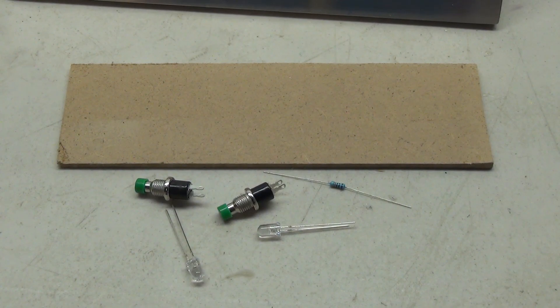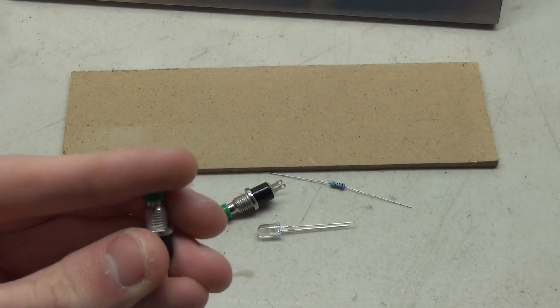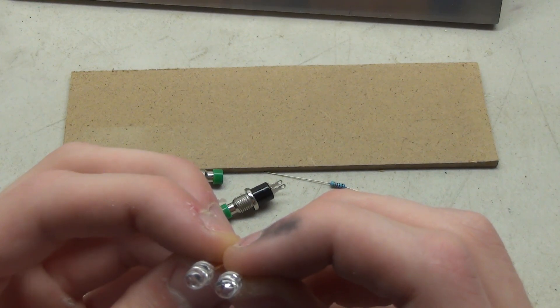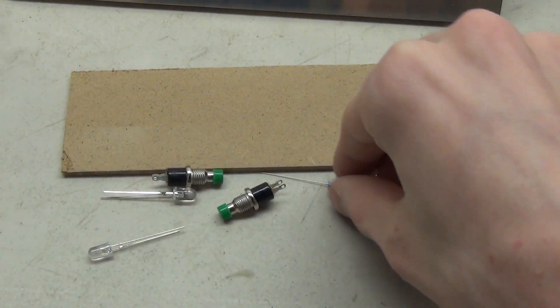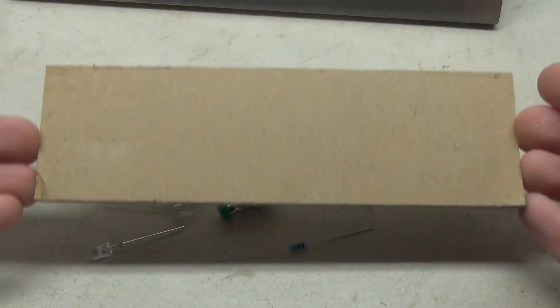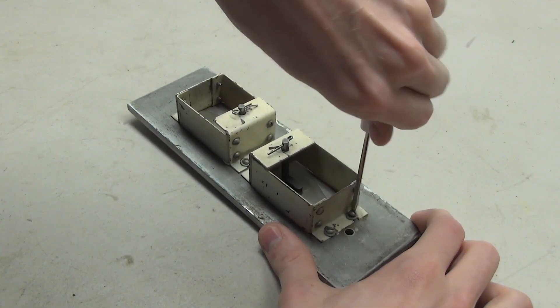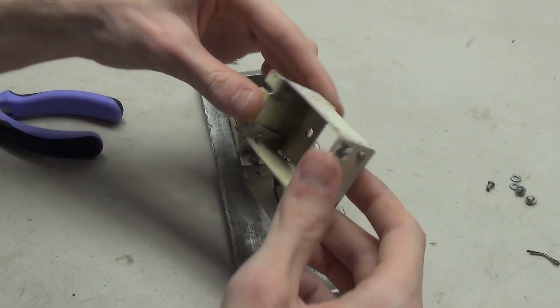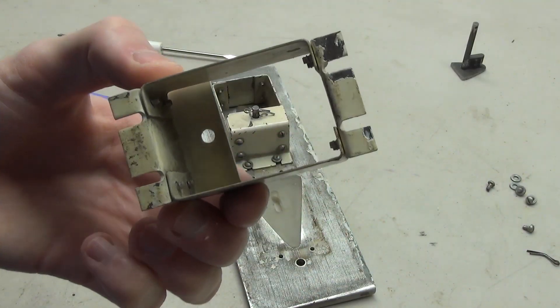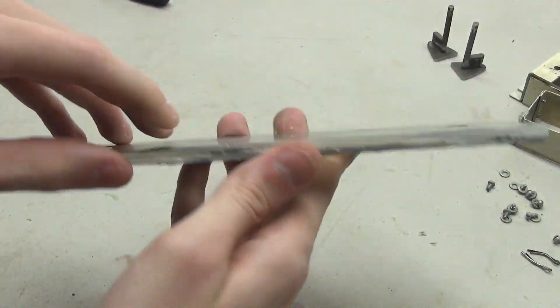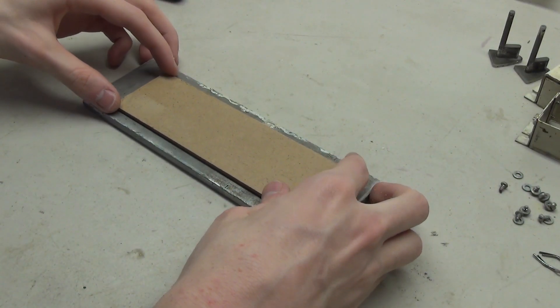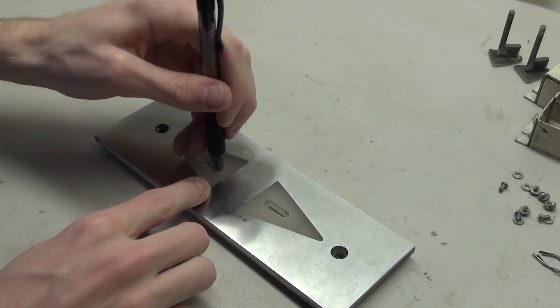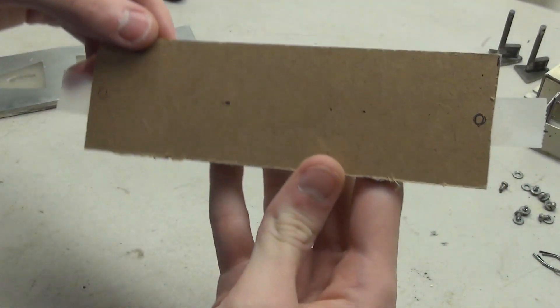So these are all the parts I'm gonna use to make this thing work. We've got two little buttons, which the little pieces will push into to activate. We've got two LEDs - one is red, one is green. Pretty sure this is the green one and this is the red one. And we've also got a little resistor as well. And we'll mount all of those onto this little board. Something like that.